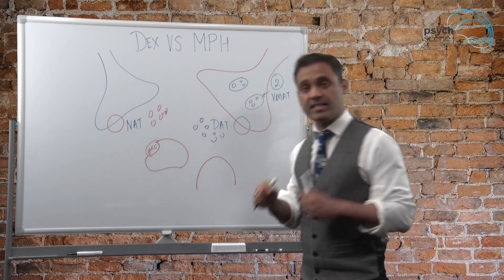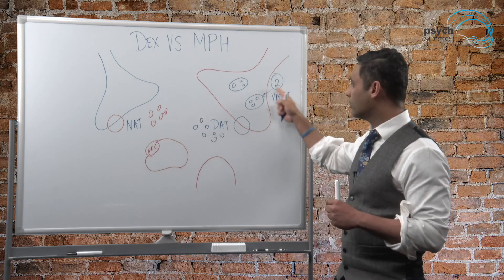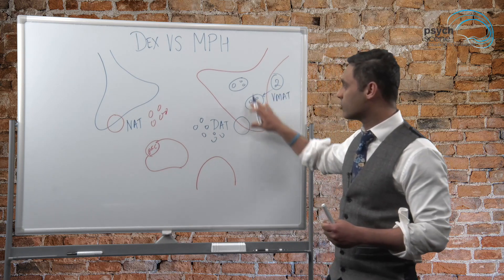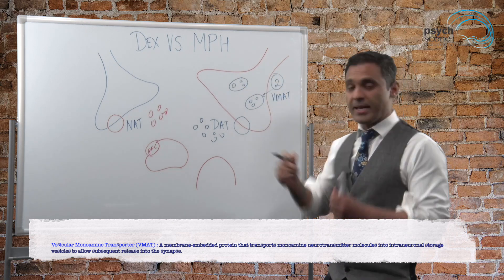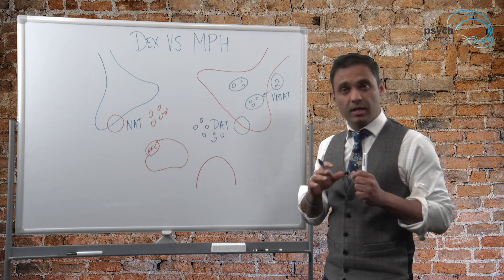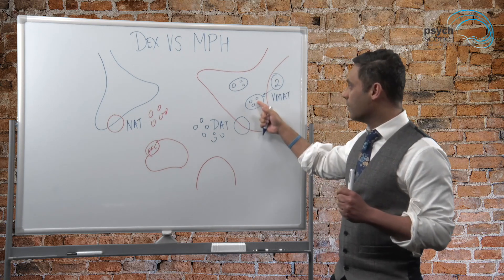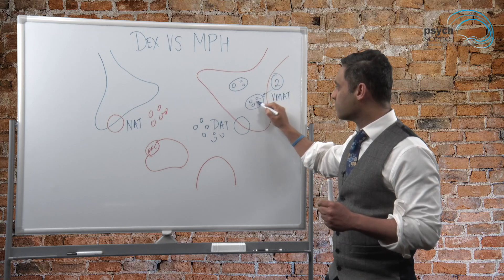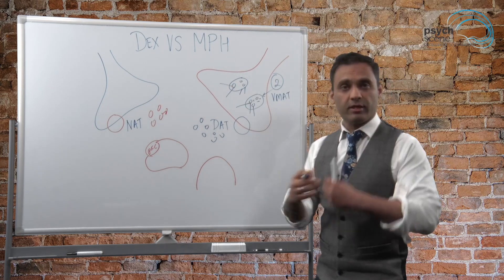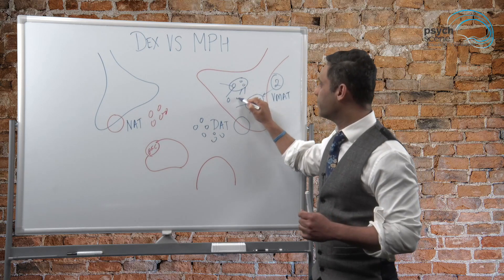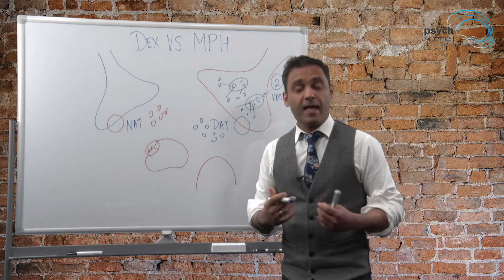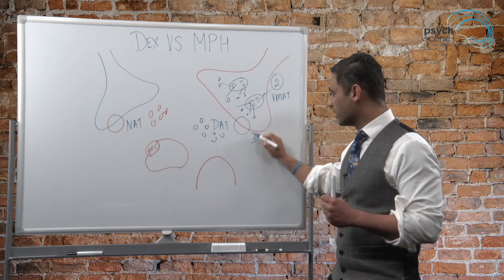Second, it is a competitive inhibitor of the vesicular monoamine transporter. Now the vesicular monoamine transporter is situated in the presynaptic neuron, basically packages dopamine into vesicles. So what amphetamine does, it will compete for that and take up space. Therefore, this dopamine will actually fall out of those vesicles. So it will basically remain in this cytosolic space.